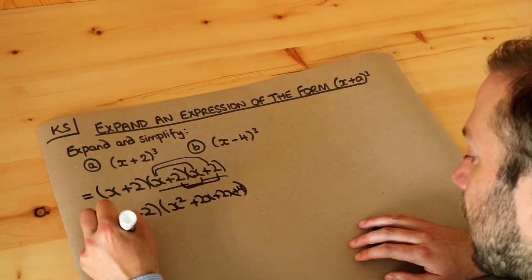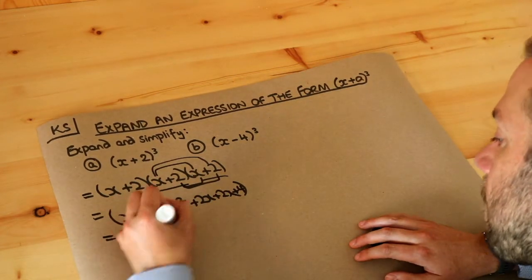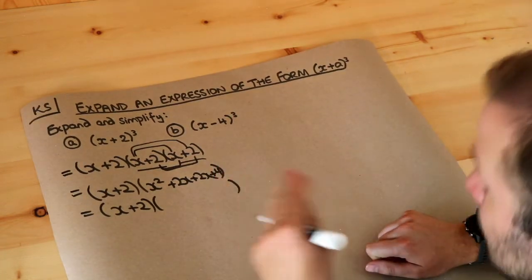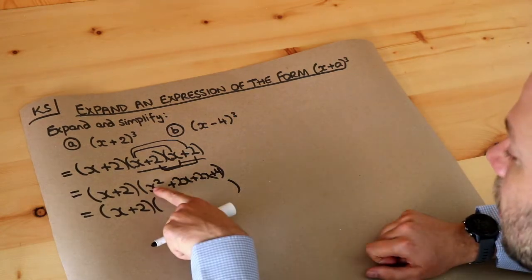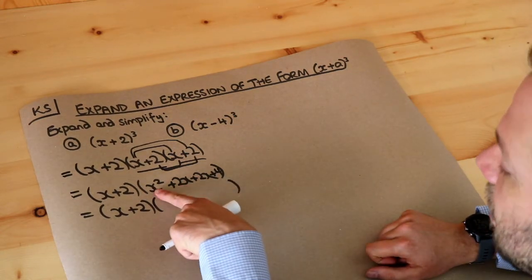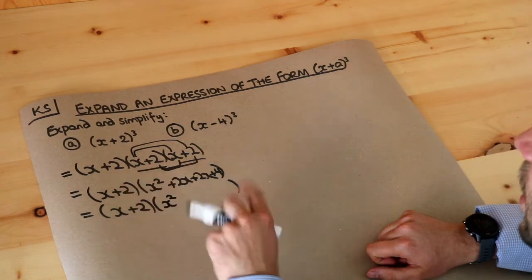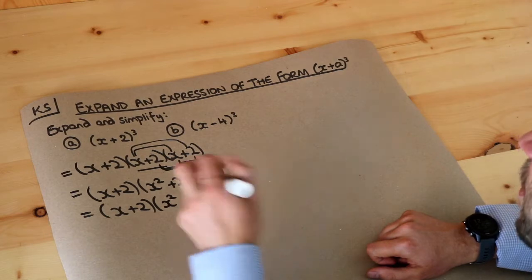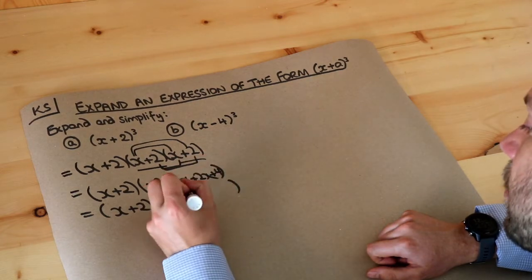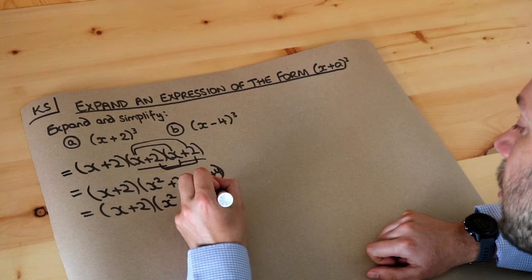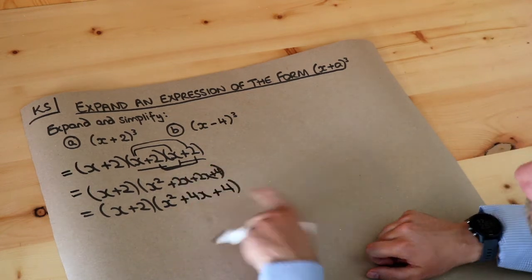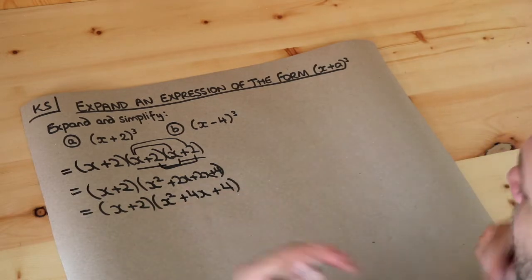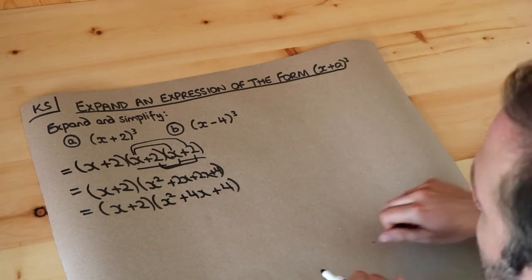Let's tidy up inside that bracket by collecting like terms. Remember, terms are only like terms if they involve the same variables and the same powers. The x squared term is the only one of its kind. The two x terms combine: 2x plus 2x is 4x. And we still have the constant term plus 4. Now we've got two brackets to expand in the usual way.